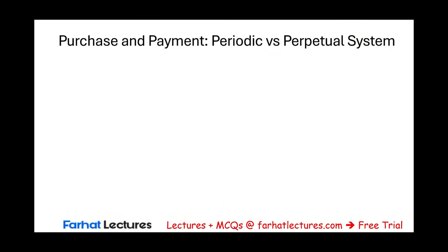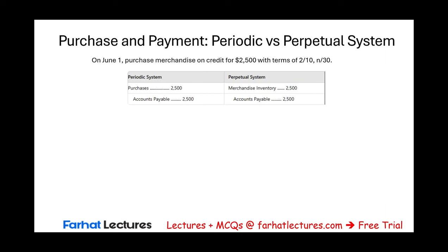We'll start with purchasing and making payment. On June 1st, we purchase merchandise for $2,500 with credit terms 2/10, n/30. Under a perpetual system, we increase inventory and increase accounts payable. Under a periodic inventory system, we debit Purchases and increase accounts payable. Purchases is a cost of goods sold account — eventually it's going to be closed to cost of goods sold.